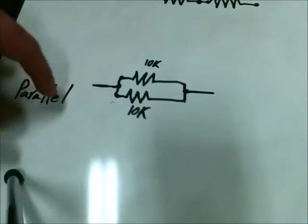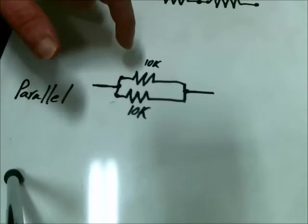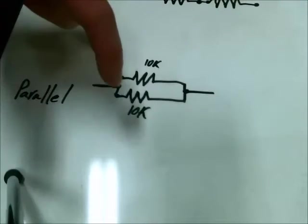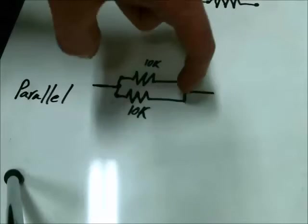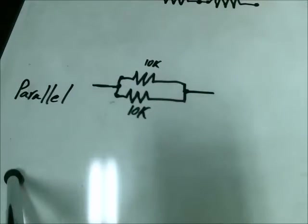So here is the parallel resistor formation. You have one resistor and another resistor connected at the same point at either end. So that's parallel resistance.